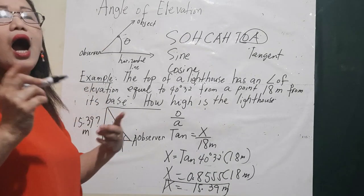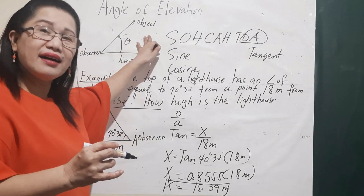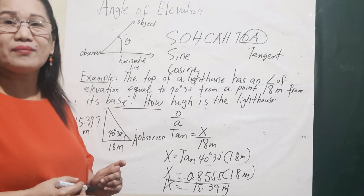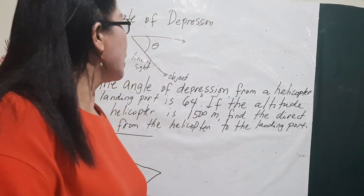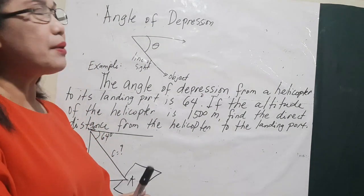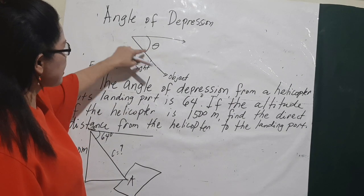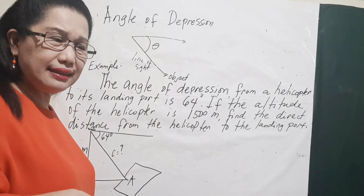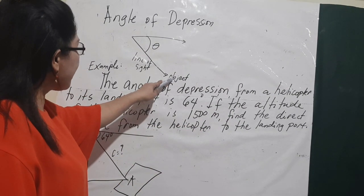This is how you apply SOHCAHTOA with the right triangle for angle of elevation. Now let us proceed to example number two — the angle of depression. When we talk about angle of depression, the observer is above, and the line of sight goes downward to an object below. The angle formed between the horizontal line and that downward line of sight is the angle of depression.